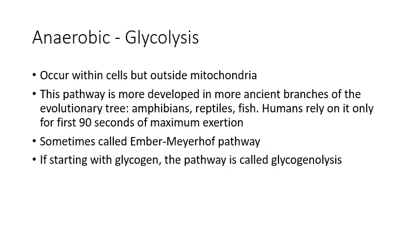We had the phosphocreatine pathway which provides energy for about five to eight seconds of maximum exertion, then we switch over to glycolysis which provides energy for about 90 seconds of maximum exertion, perhaps a bit more if you're a trained athlete. This pathway is also called the Embden–Meyerhof pathway after the people that discovered it. It's very similar to the pathway involving breakdown of glycogen — if we start with glycogen, break it into glucose, and then glucose goes through glycolysis, this is referred to as glycogenolysis.